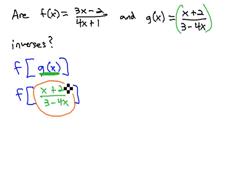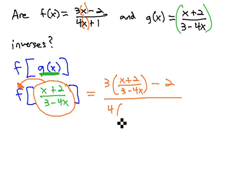That means take this big ugly fraction and replace each of the variables in f with this big ugly fraction. So we've got the variable in here twice. Both of those variables are going to be replaced with this fraction. So we have 3 times x plus 2 over 3 minus 4x minus 2, all over 4 times x plus 2 over 3 minus 4x plus 1.